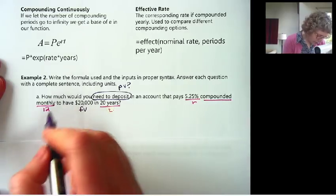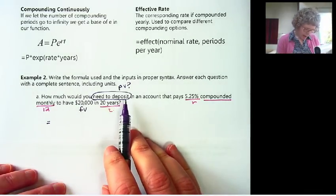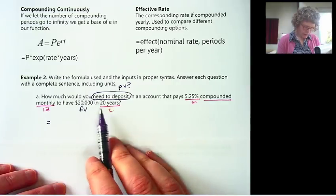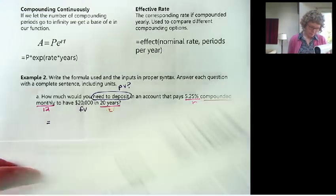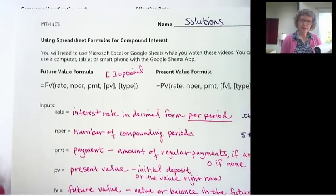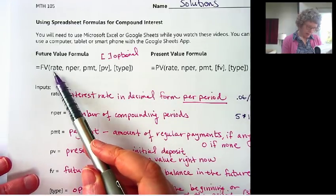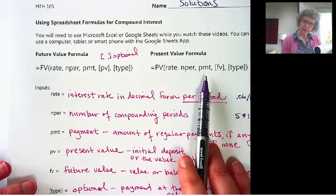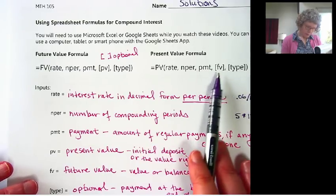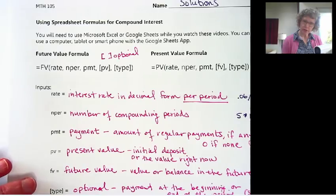Very similar to the future value. How much do we need to deposit now in order to have 20,000 in 20 years? Okay, let me find my formula. They're very similar. So the present value is used exactly like the future value. We still have the rate, number of periods, and payment. The only thing is we put the future value at the end as the input.